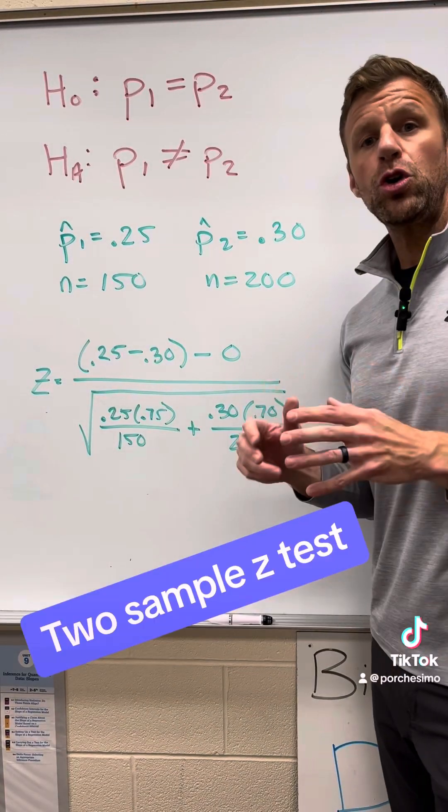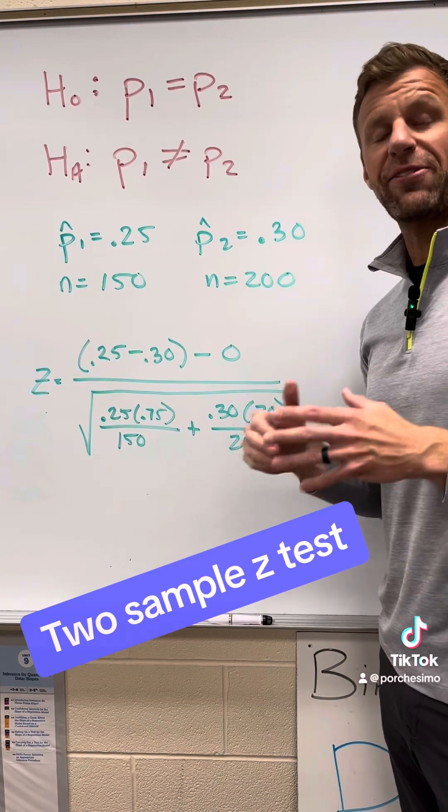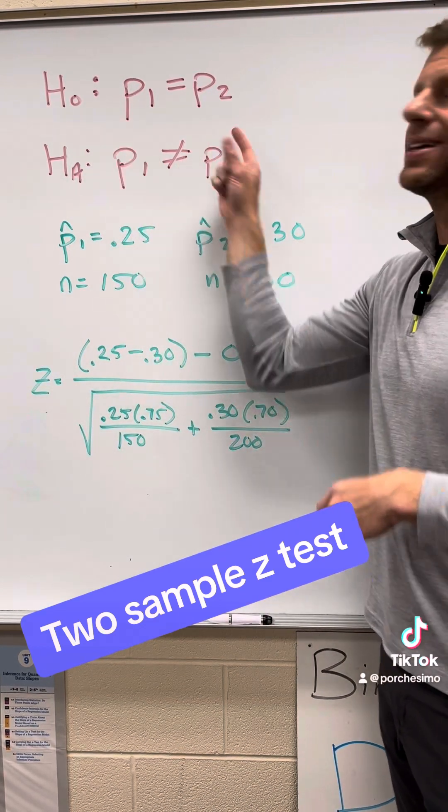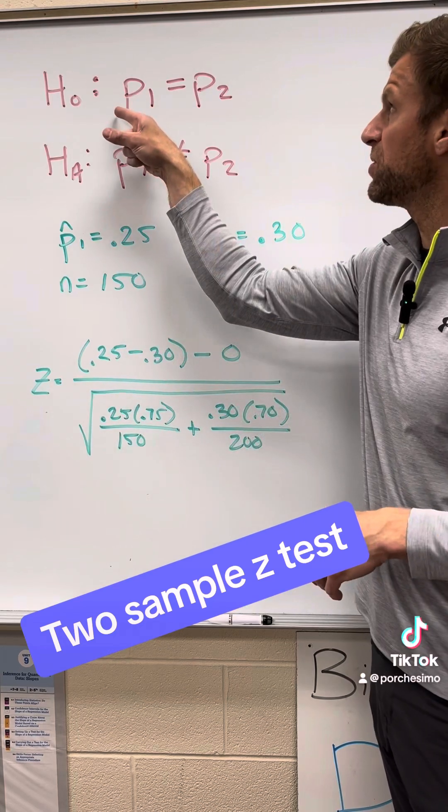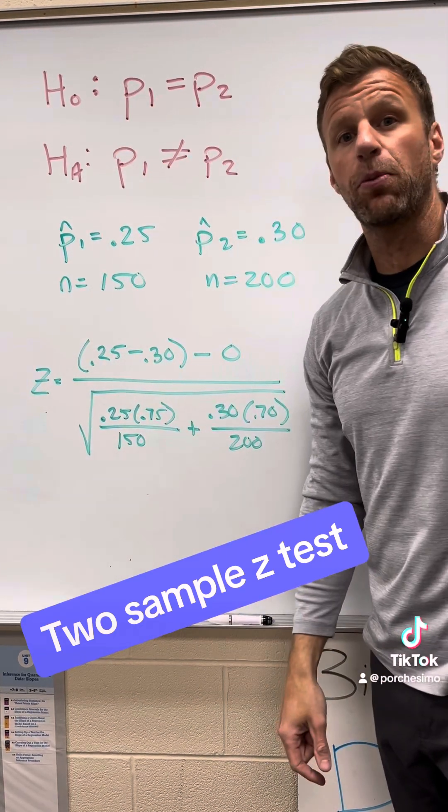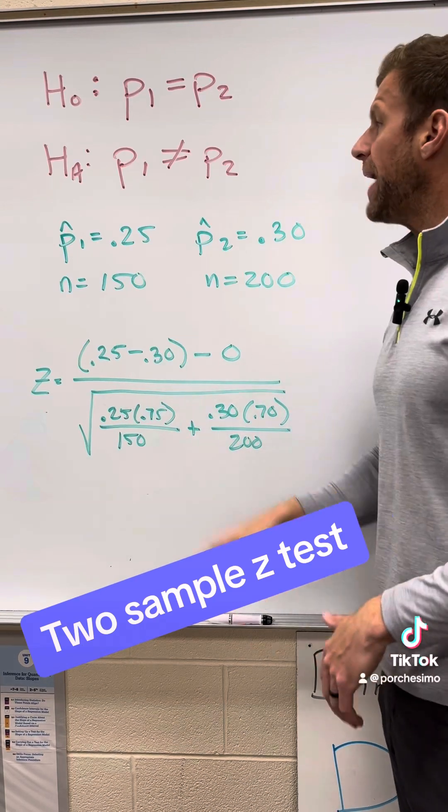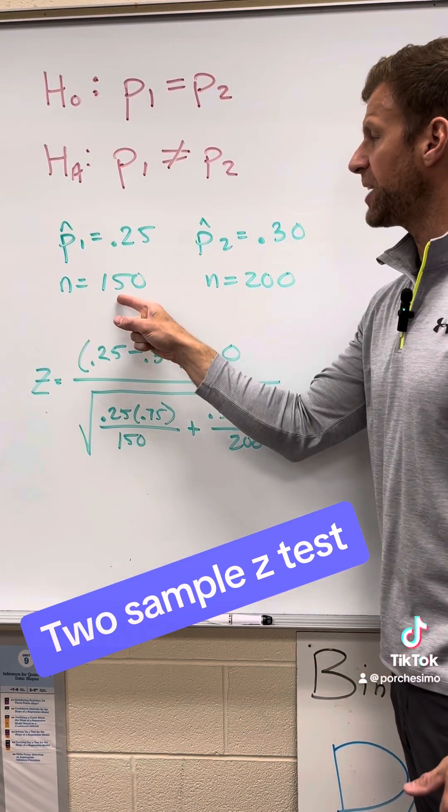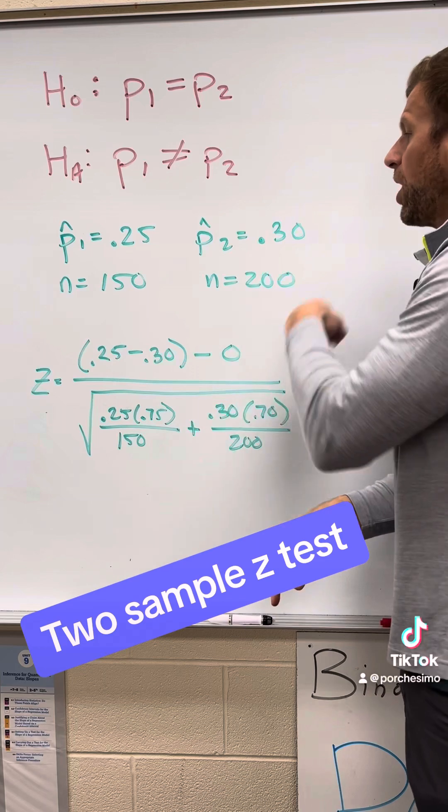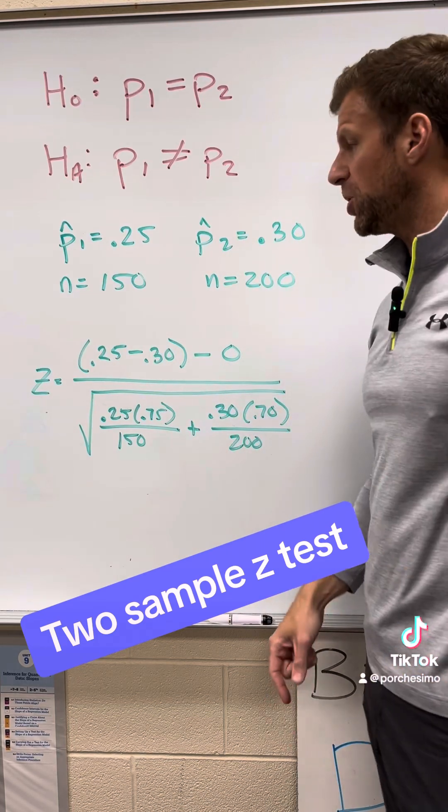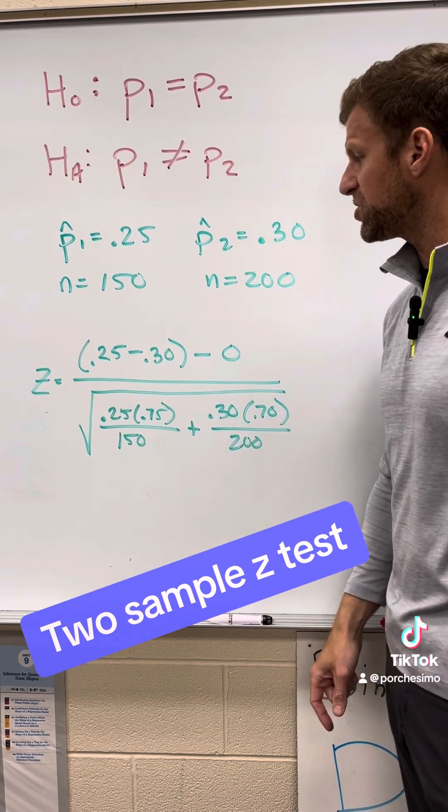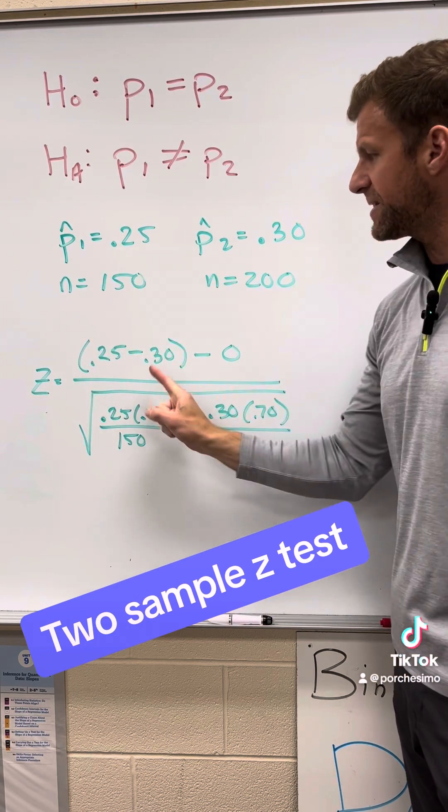Here is a two sample z test for the difference between two population proportions. So the null is that there's no difference—the population proportion from one is the exact same as the population proportion for two. And the alternative in this case is that they're not the same. Now here is our data from our first sample taken from population one and our second sample taken from population two. Now our test statistic is going to be our z score.